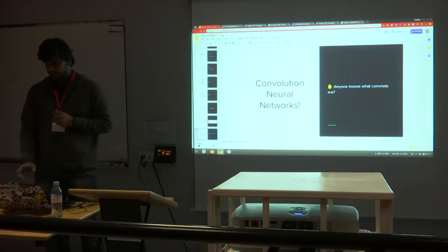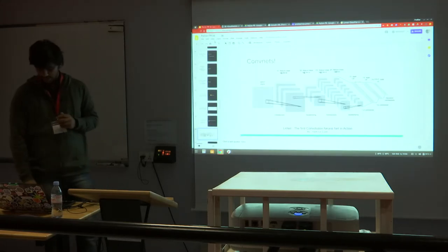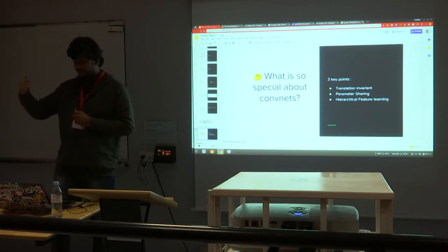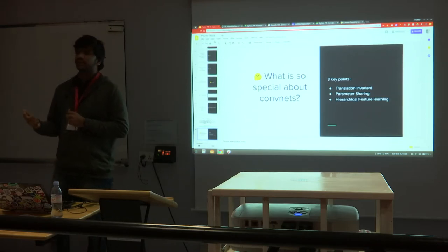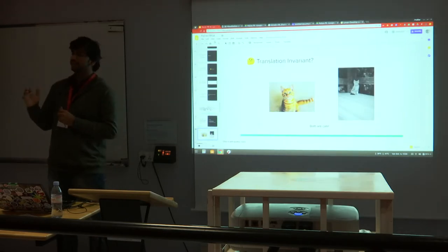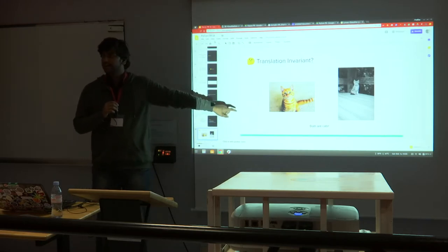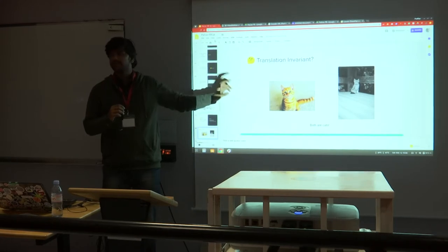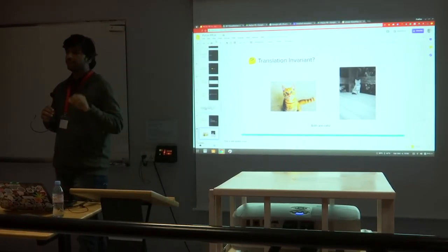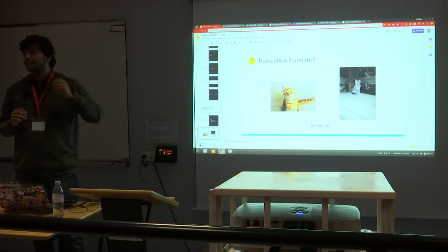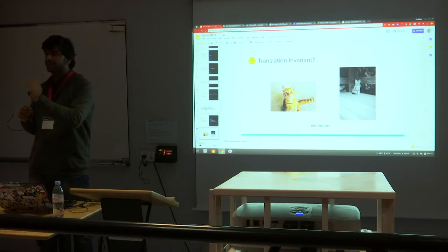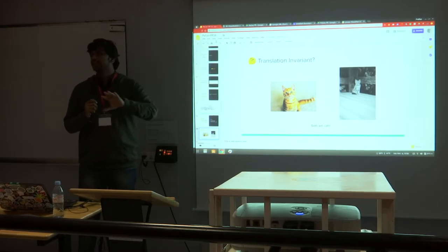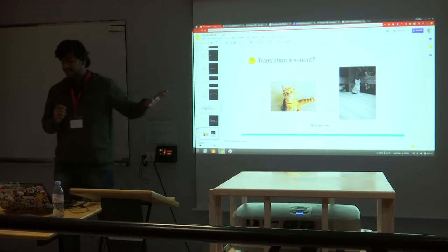We have convolutional neural networks to address this. What's special about convolution? Three key points: translation invariance, parameter sharing, and hierarchical feature learning. Translation invariance means a cat in the center of an image and a cat off-center are both cats. A computer can't perceive what a cat is — it goes pixel by pixel. We need an algorithm that determines both are cats regardless of position in the image.